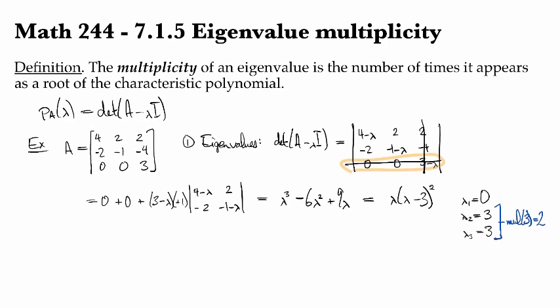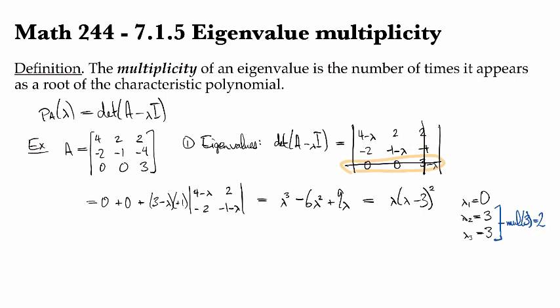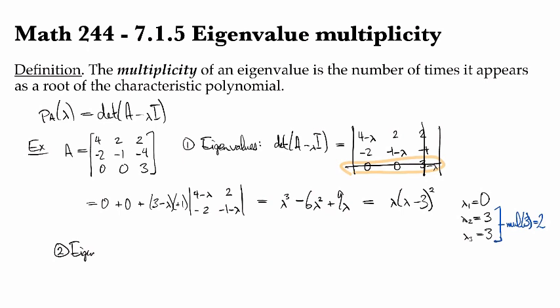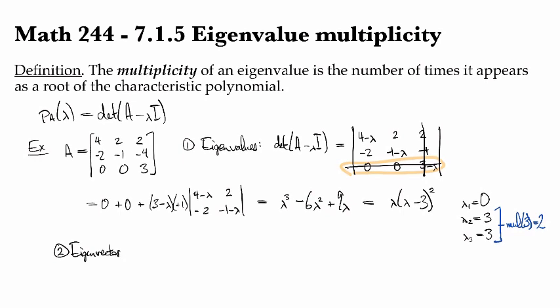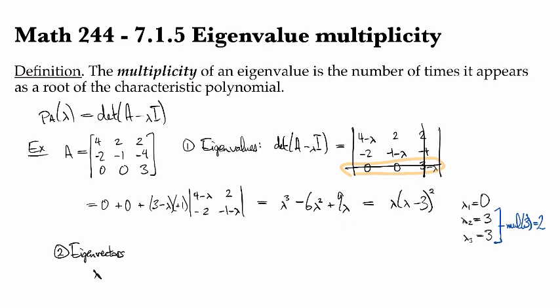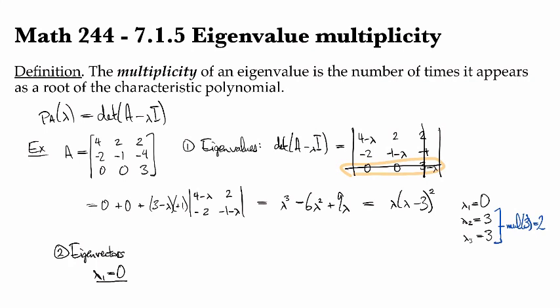That can determine sort of what happens next with the eigenvectors. So let's look at that part next. Let's get the first one out of the way, lambda_1 equal to 0. In this case, we're going to be row reducing, or trying to find a basis for the null space of A minus 0I, which is actually just the original matrix A itself. So I've got [4, 2, 2; -2, -1, -4; 0, 0, 3].